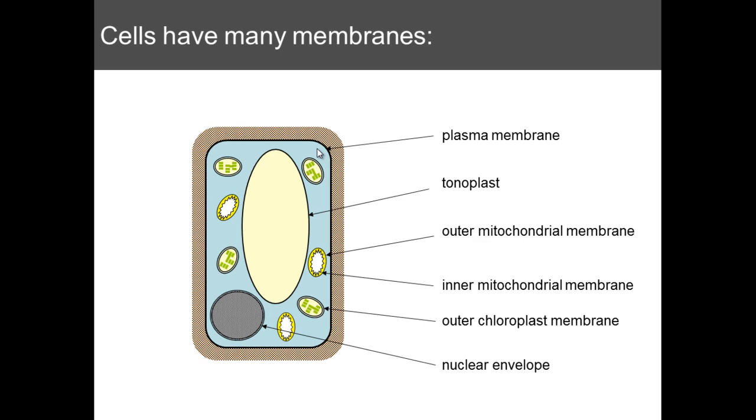The first thing to realize about cells is that there are a number of different membranes found within the cell. You have a plasma membrane on the outside, the tonoplast, two on the mitochondria including one on an inside structure called a cristae, one on a chloroplast, and some form of membrane on the nuclei as well. So membranes are found throughout and today we are going to be mainly looking at plasma membranes.